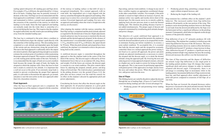After the base-to-final approach turn is completed, the longitudinal axis of the airplane is aligned with the centerline. For all practical purposes at a given pitch attitude, there is only one power setting for one airspeed, one flap setting, and one wind condition. A change in any one of these variables requires an appropriate coordinated change in the other controllable variables. For example, if the pitch attitude is raised too high without an increase of power, the airplane settles very rapidly and touches down short of the desired spot. Never try to stretch a glide by applying back elevator pressure alone to reach the desired landing spot, as this shortens the gliding distance if power is not added simultaneously.